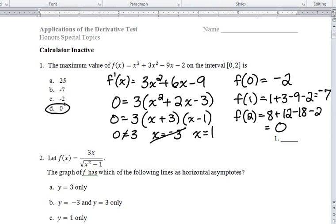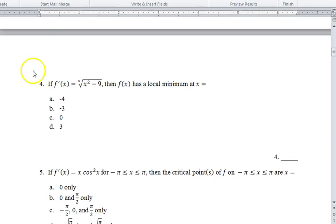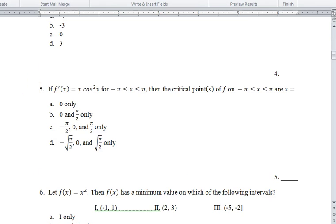Okay, let's look at number 5. Eight people missed number 5. The derivative is equal to x times cosine squared of x between negative pi and pi. And the critical points on that interval are, well, you're looking at the derivative. So all we have to do is set the derivative equal to 0. So it's a product. So we just set x equal to 0, and we set cosine squared equal to 0.